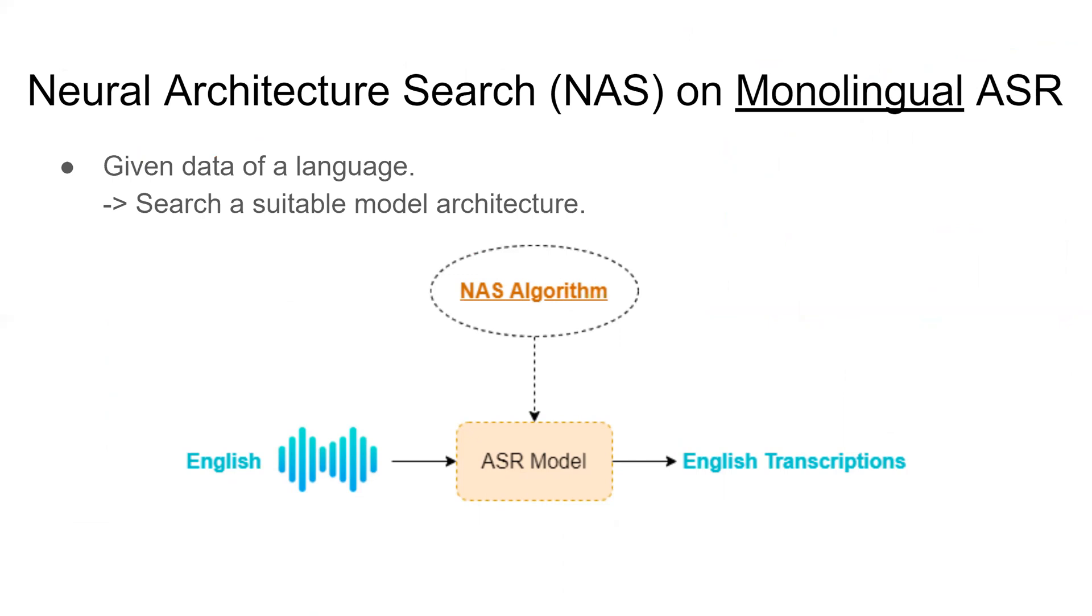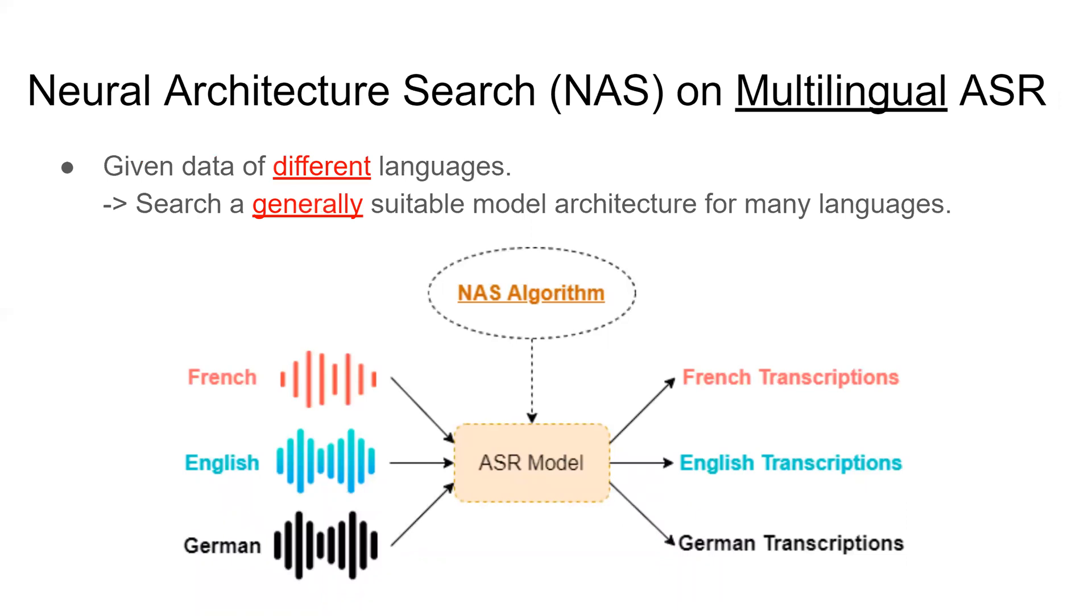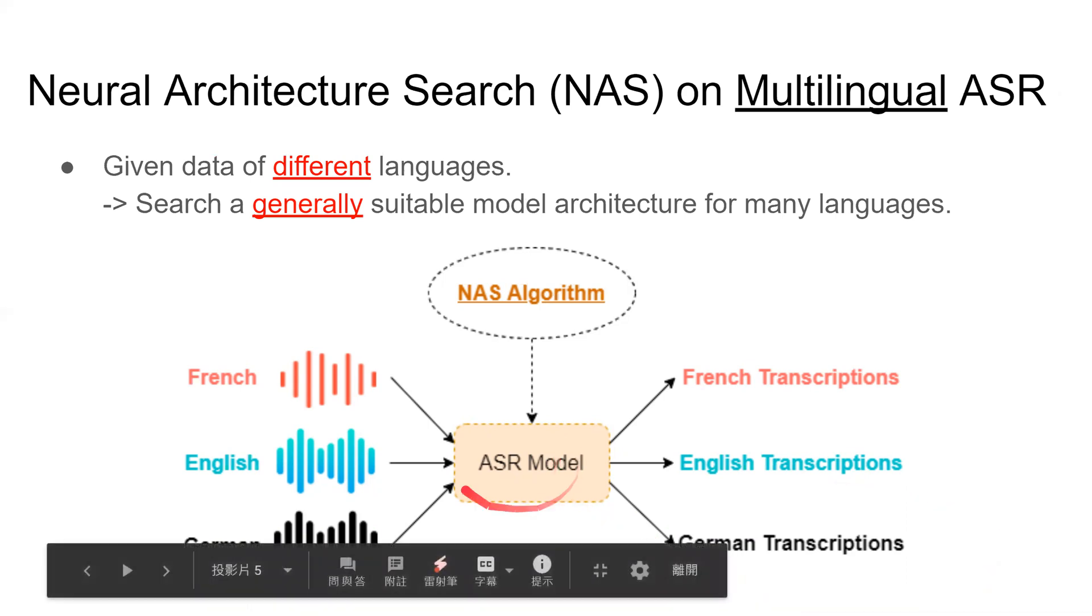There are two settings in this work. In the first one, we perform monolingual ASR. Given data of a language, we want to use an architecture search algorithm to find a good architecture for this language. In the second one, we perform multilingual ASR, where we have data of several languages. In this setting, we want to use the architecture search algorithm to find one general good architecture for many languages.